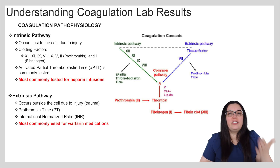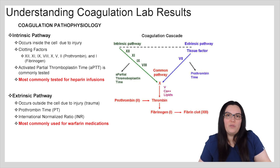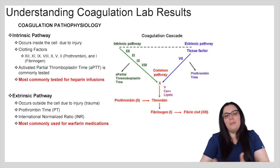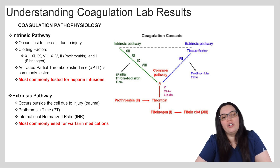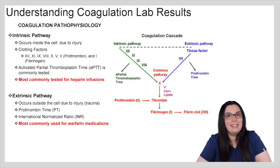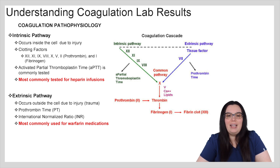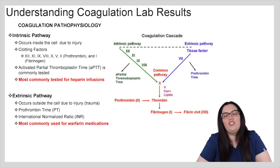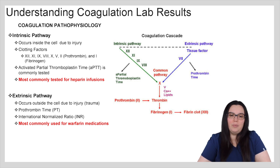To further our understanding of coagulation, we have to understand the pathophysiology pathways. Beginning with the intrinsic pathway: this occurs inside the cell due to injury, and the clotting factors it evaluates are 12, 11, 9, 8, 10, 5, and 2 for prothrombin, and 1 for fibrinogen. Activated partial thromboplastin time is commonly tested for the intrinsic pathway and is most commonly tested because of heparin infusion therapies.